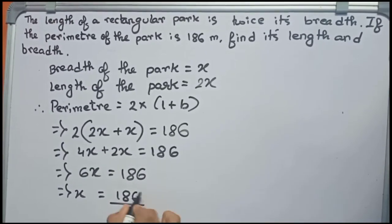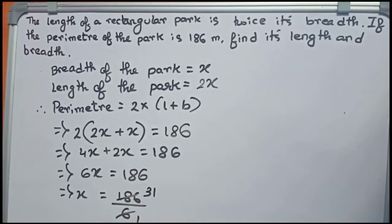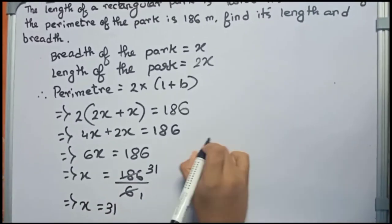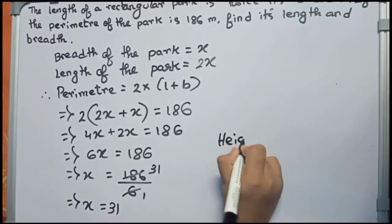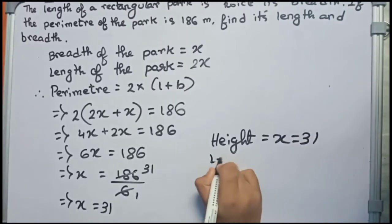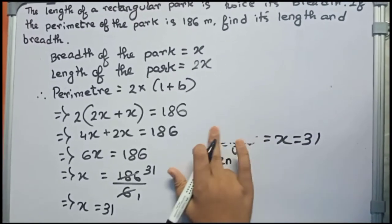You can cut it directly. 31. So x equals to 31. Now we find the breadth. Breadth equals to x, that is 31 meters.